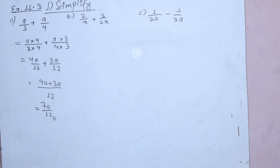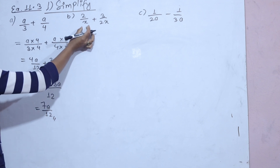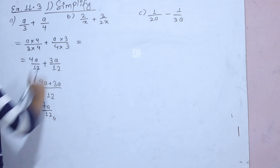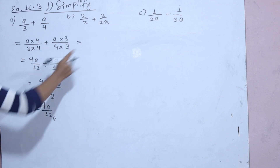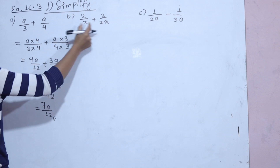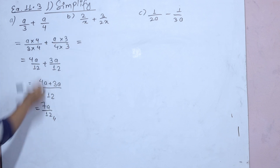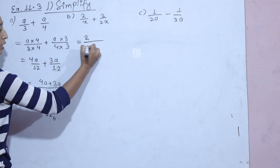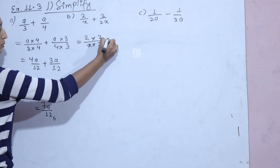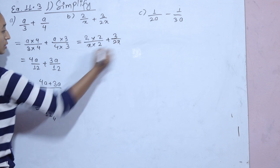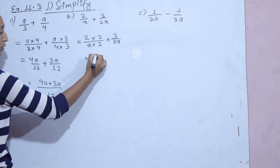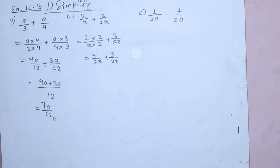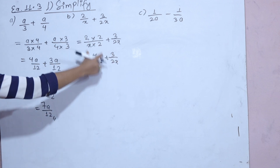Now I will show you the next number. The denominators are x and 2x. The x is not the same — you need to multiply by 2 to make them equal. So we get 2 by 2x plus 3 by 2x, giving us the same denominator 2x.